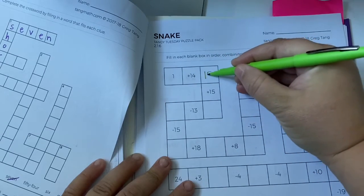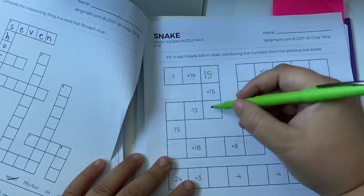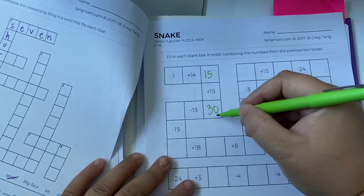So, we're going to start just doing the operations. 1 plus 14 is 15. 15 plus 15 is 30. You're going to keep going.